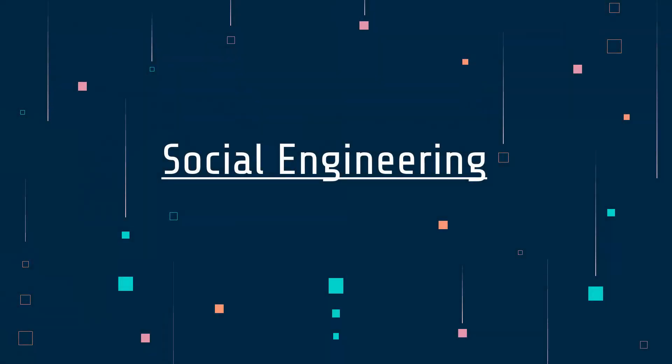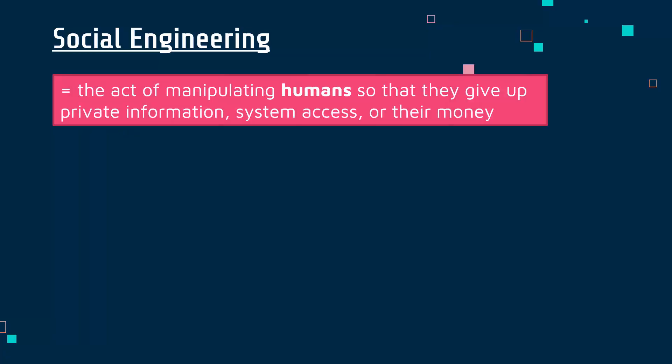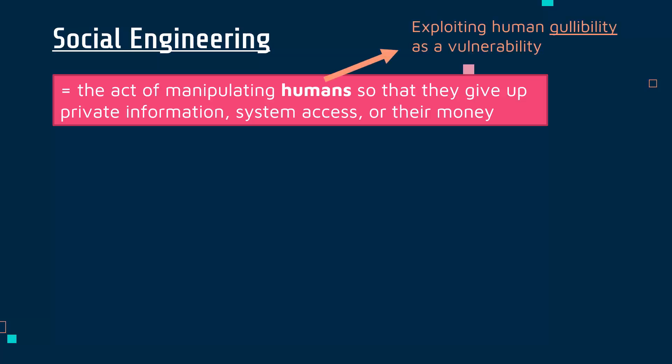When people think of cyber attacks, we often think of really technical, skilled hackers breaking through networks and computer systems. But actually a lot of attacks are more psychological and involve manipulating humans, which is really what social engineering is. Social engineering is the act of manipulating humans so that they give up private information, access to systems, or just their money. Attackers are exploiting human gullibility — falling for tricks and believing people who are lying — as a vulnerability.